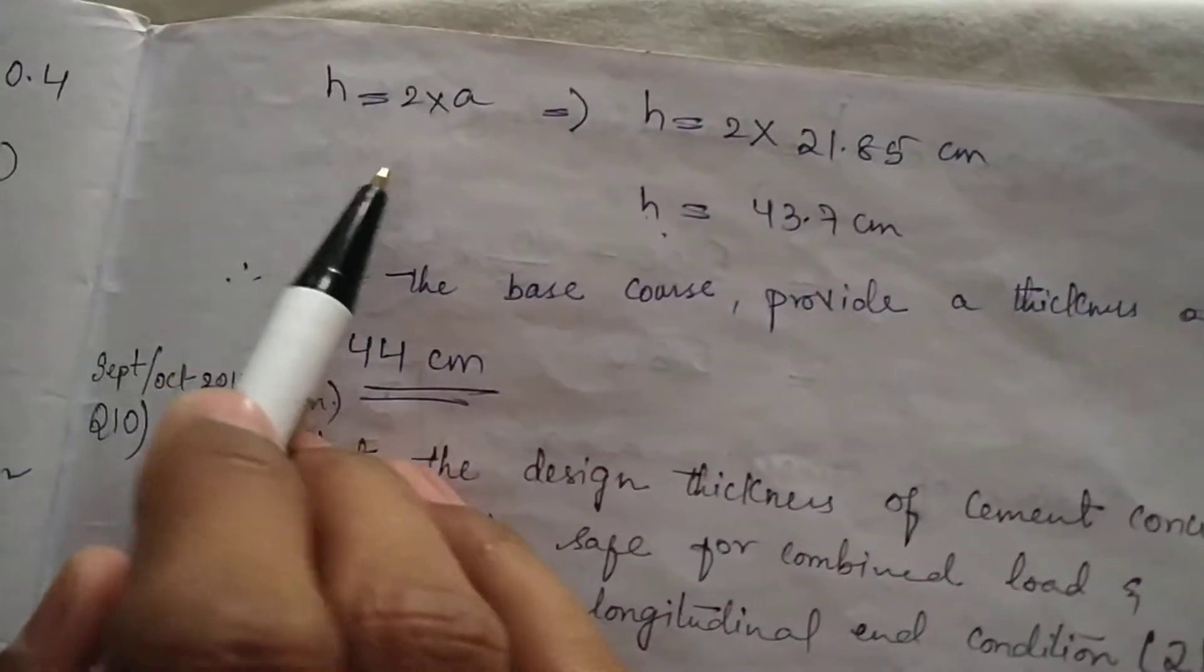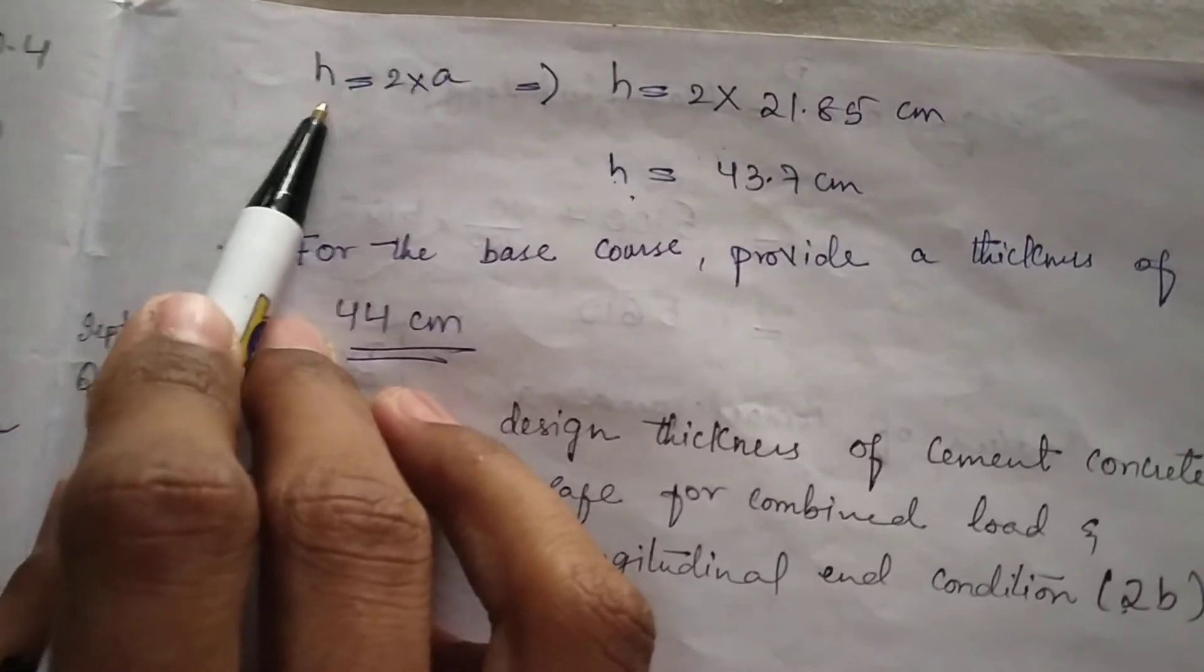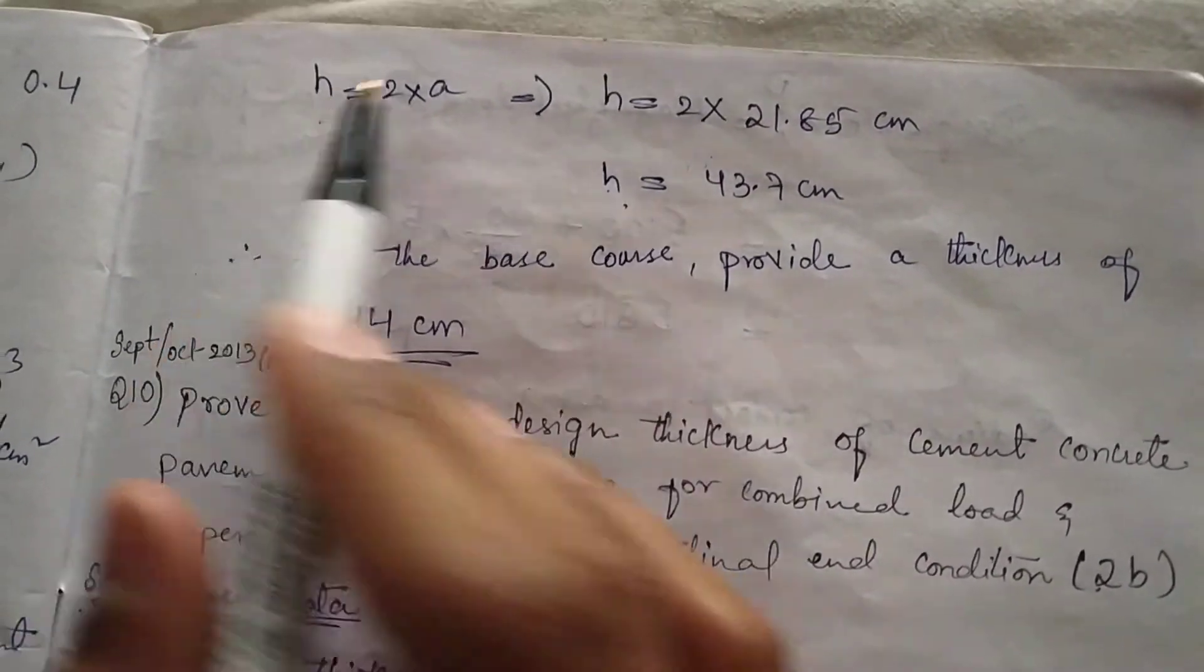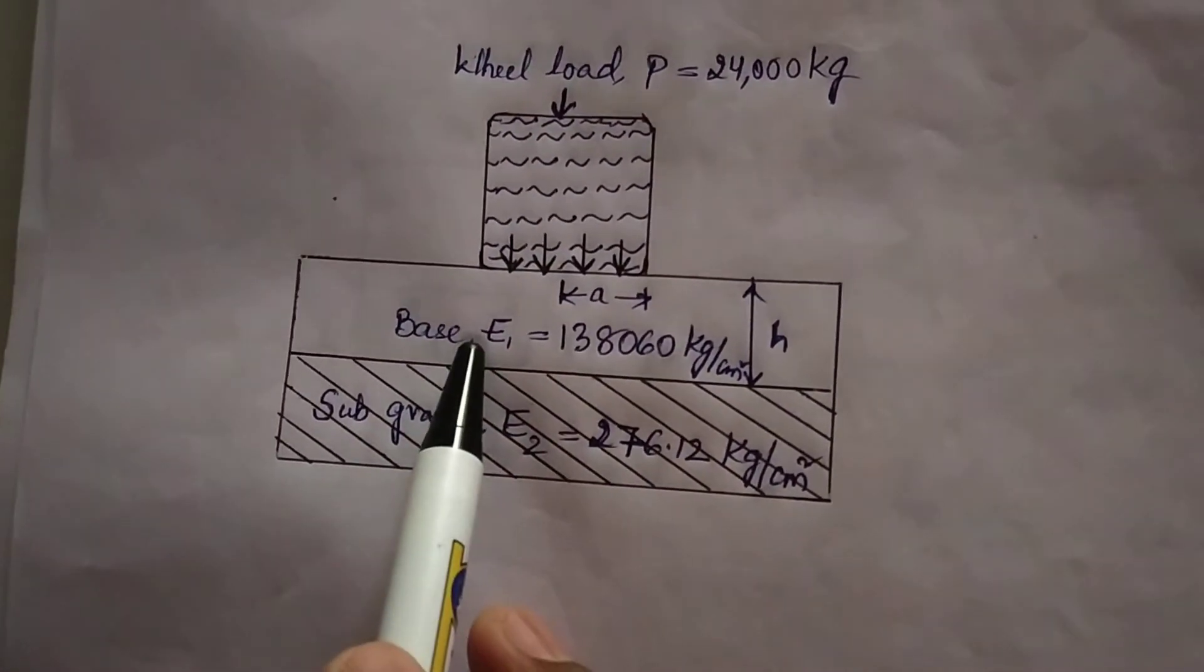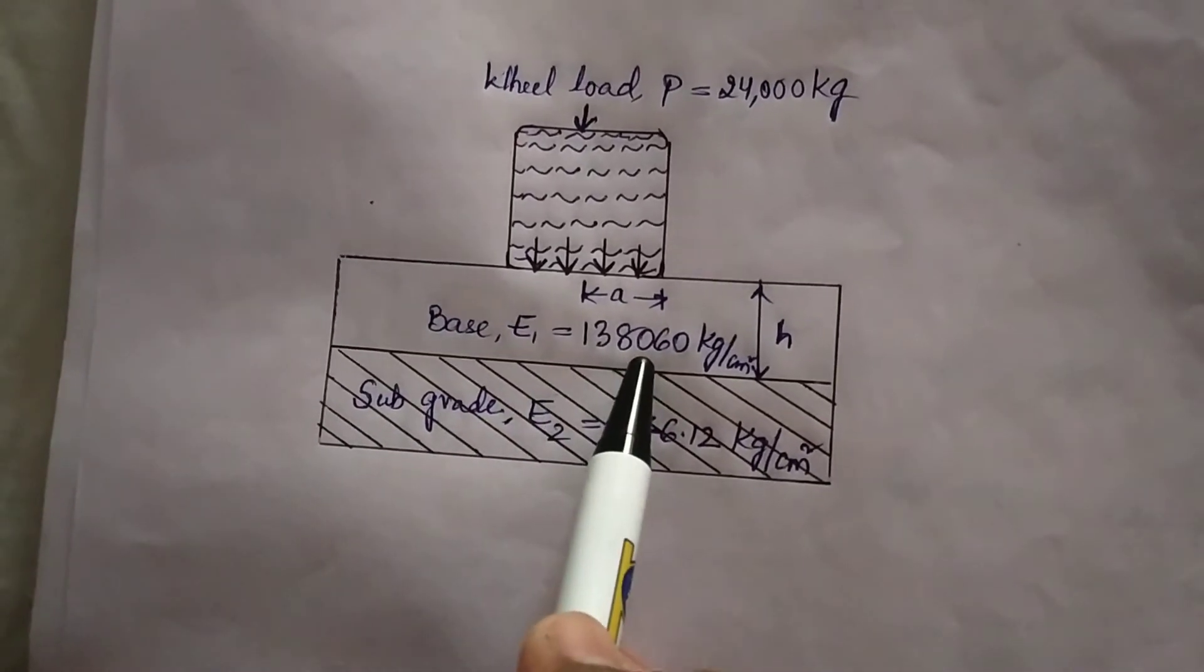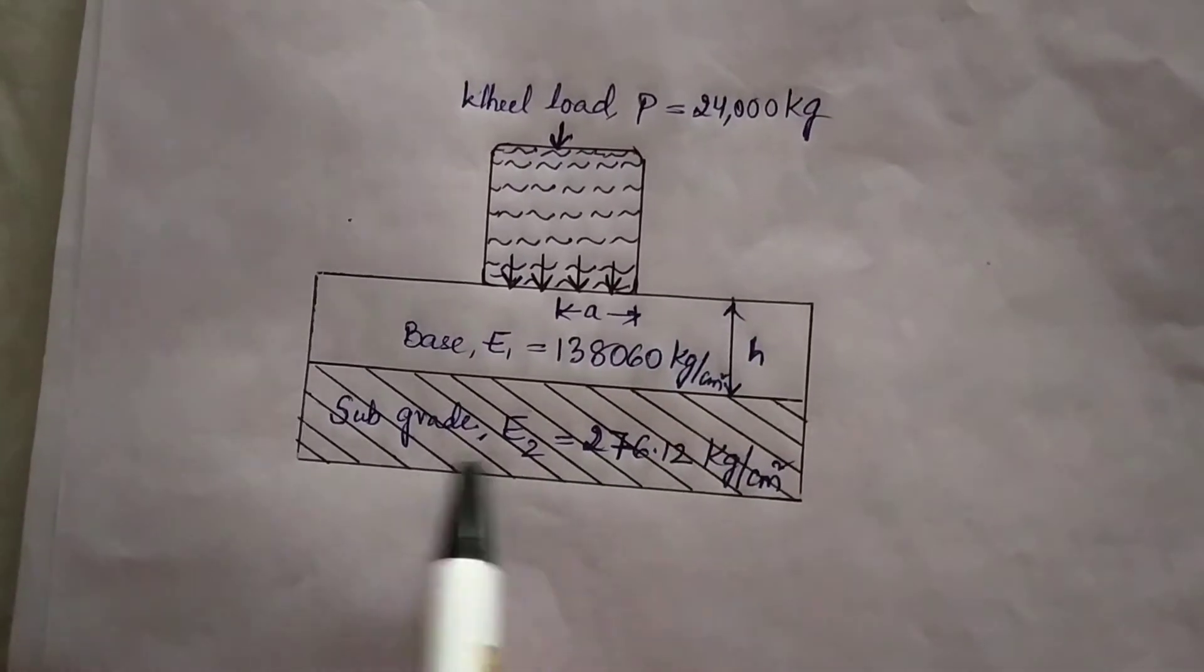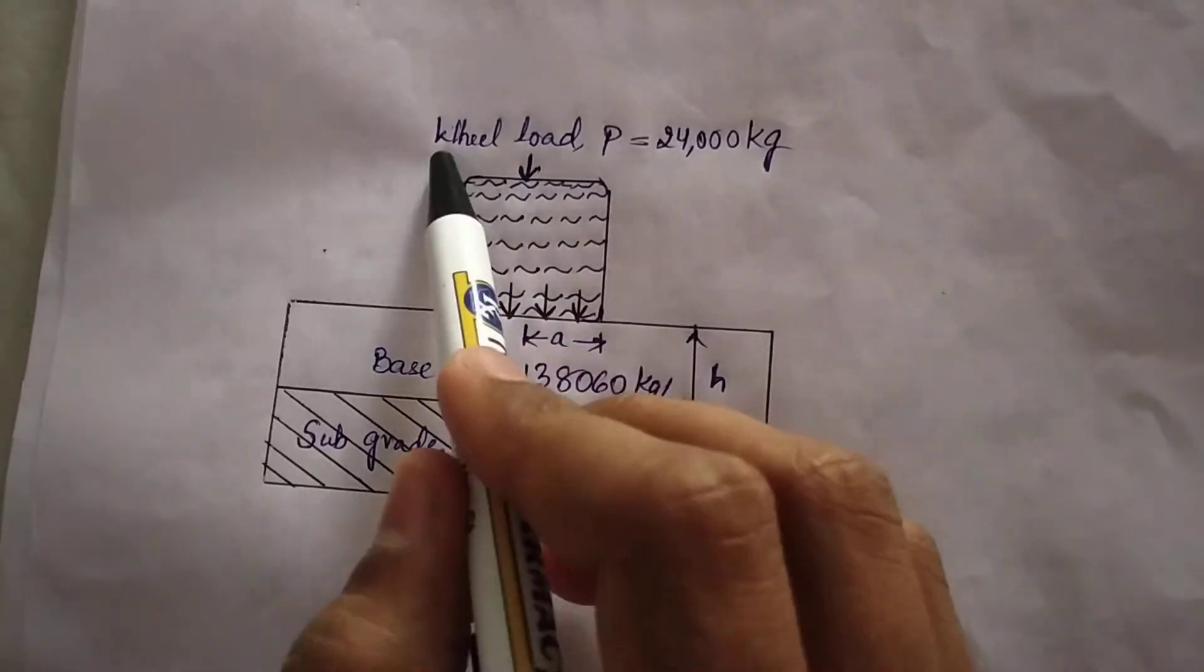Now I will show the figure for how we will get the thickness. See here, I have calculated E1 as 138060 kg per cm square and E2 as 276.12 kg per cm square.